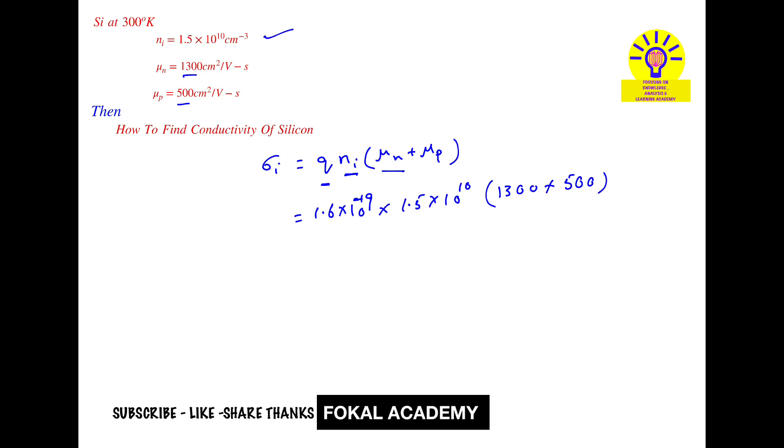By simplifying this we will get 4.32 into 10 power minus 6 Siemens per centimeter. So this is the unit for conductivity.